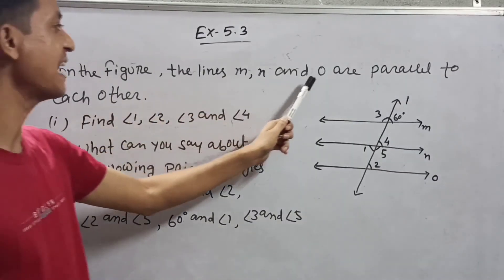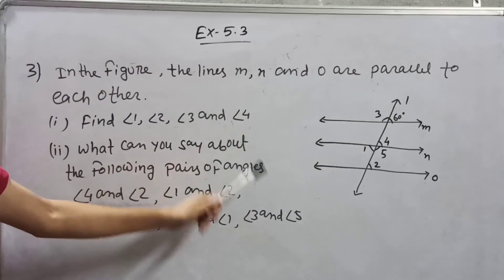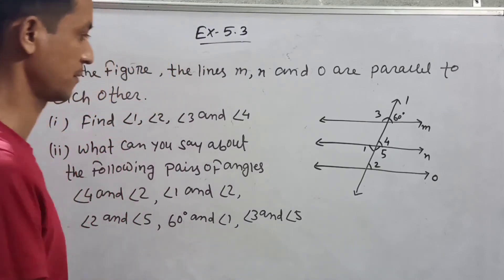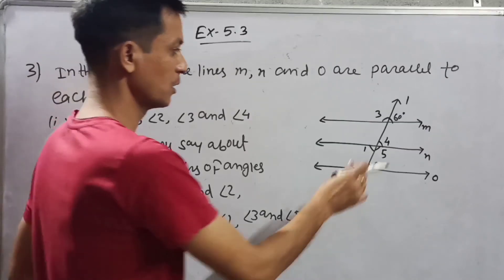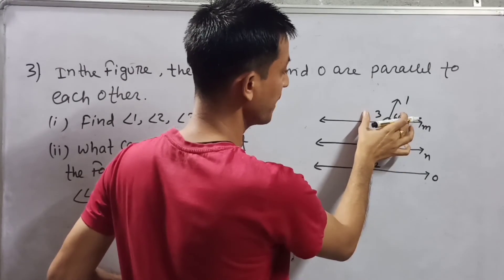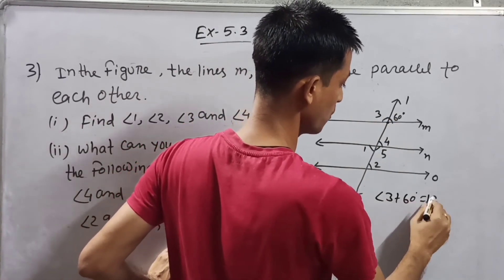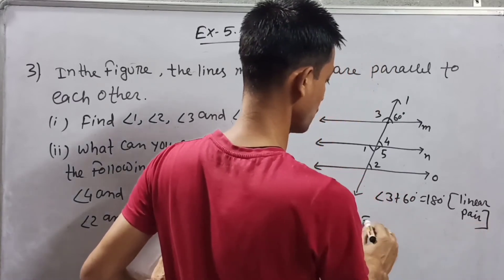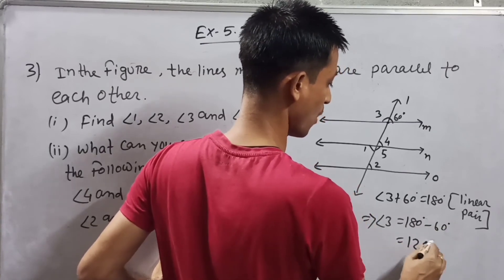Next, number three: in the figure, lines M and O are parallel to each other. Find angle 1, angle 2, angle 3, and angle 4. Angle 3 plus 60 degrees equals 180 degrees — linear pair. So angle 3 is equal to 180 minus 60, which equals 120 degrees.